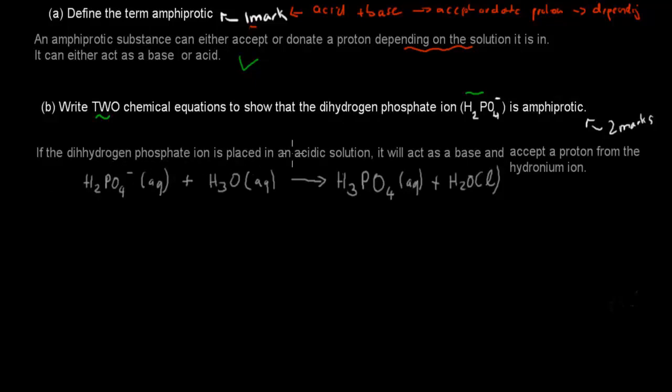So what I did was, if the dihydrogen phosphate ion is placed in an acidic solution, it will act as a base and accept a proton from the hydronium ion. And then I wrote the equation, H2PO4- plus H3O+, both in an aqueous solution, going into H3PO4 plus H2O.